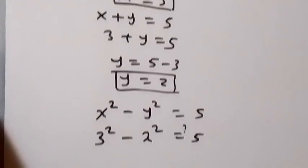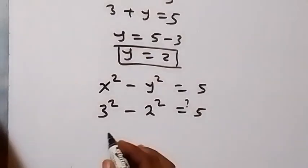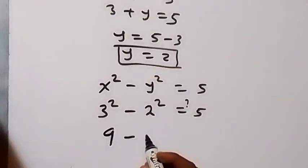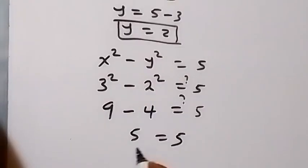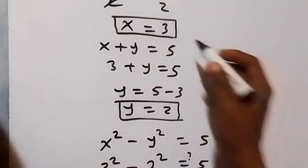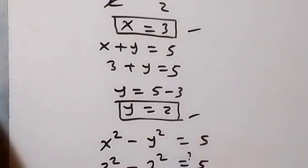Then 3 squared is 3 times 3 which is 9 from here. 2 squared, 2 times 2, which is 4. Is this equal to 5 from here? Then here we have 5 which equals 5. And then the left-hand side equals the right-hand side. And we have therefore x equals 3 here and y equals 2.